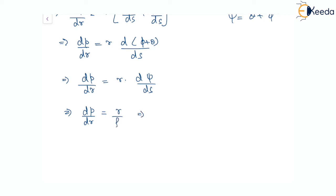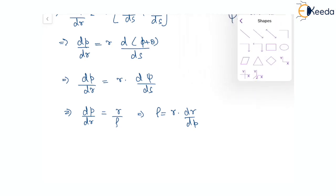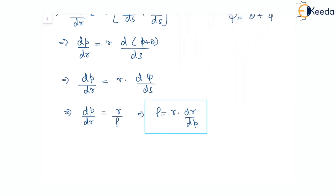Therefore, rho equals r times dr/dp. This is the expression for radius of curvature in the pedal graph, and this is the result we will be using. I hope it is clear, thank you.